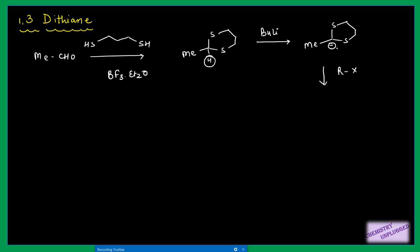We can use this carbanion in further reactions. For example, reacting it with a halide — the negative charge will attack and R will be removed. We can use HgCl₂ and do hydrolysis, so this 1,3-dithiol portion will be removed and we have a ketonic group attached here. If we use Raney nickel instead, it will simply reduce the position to a CH₂ group.